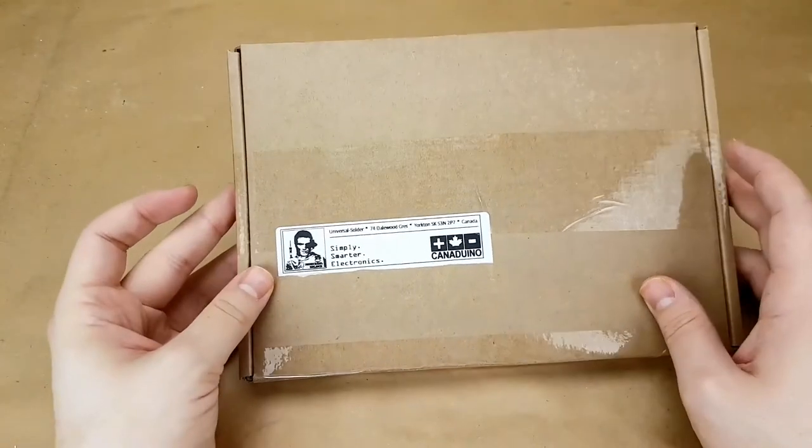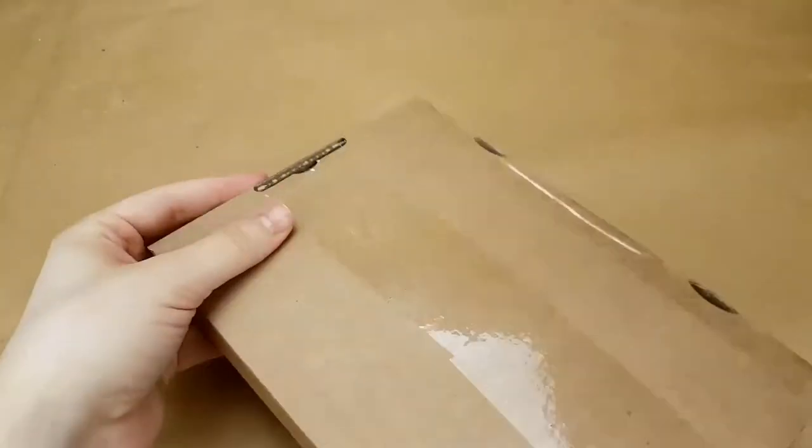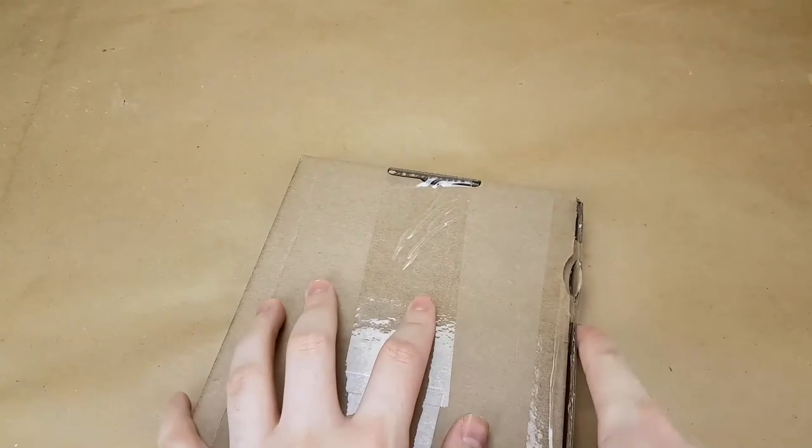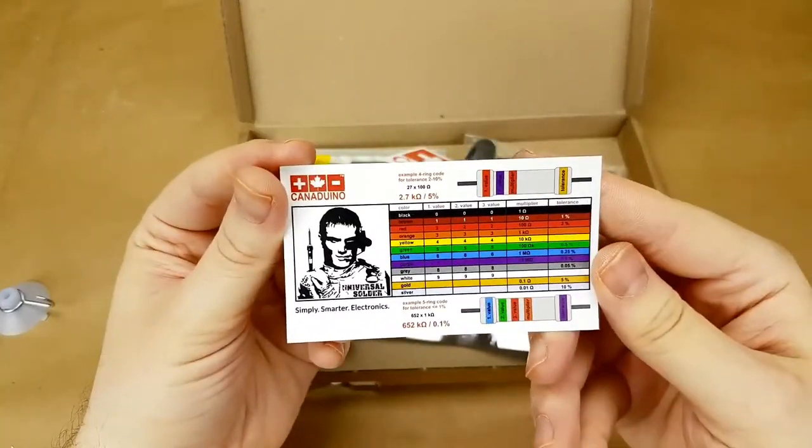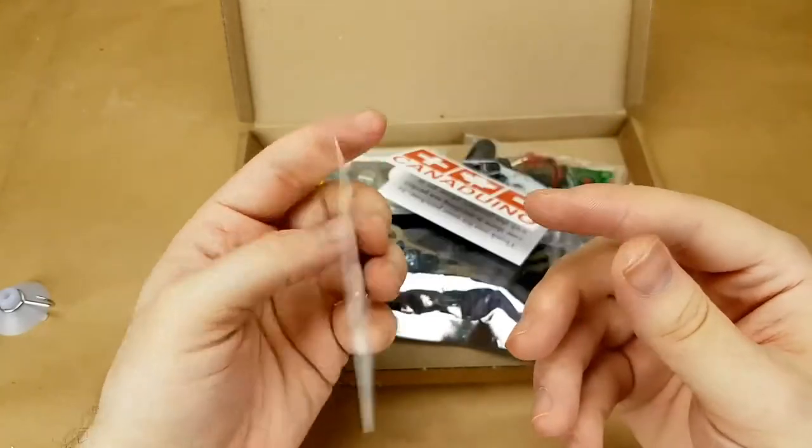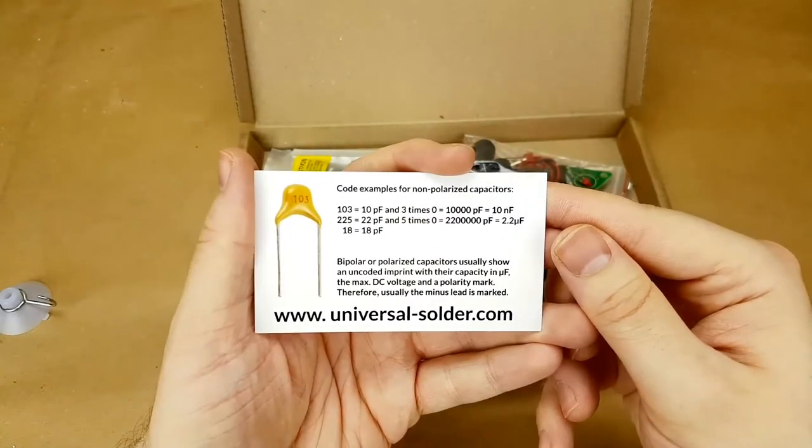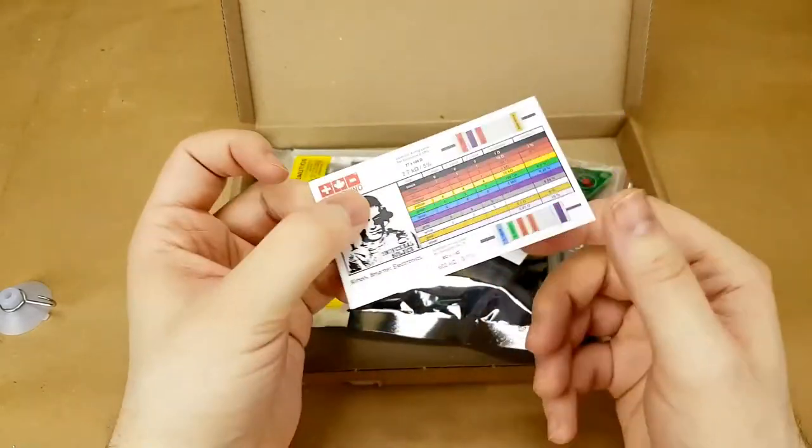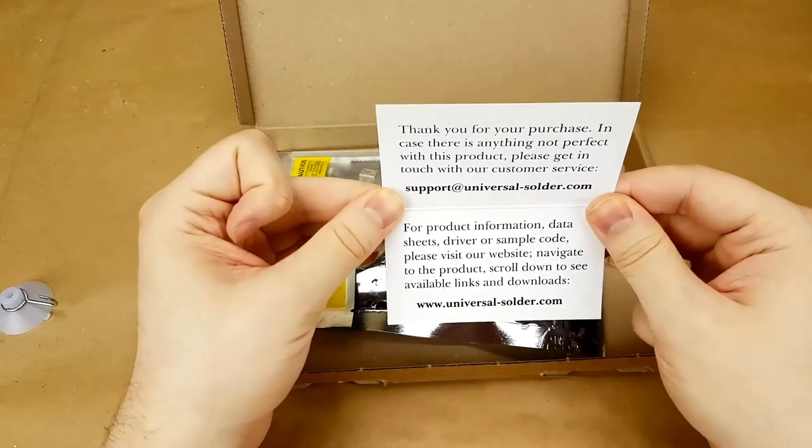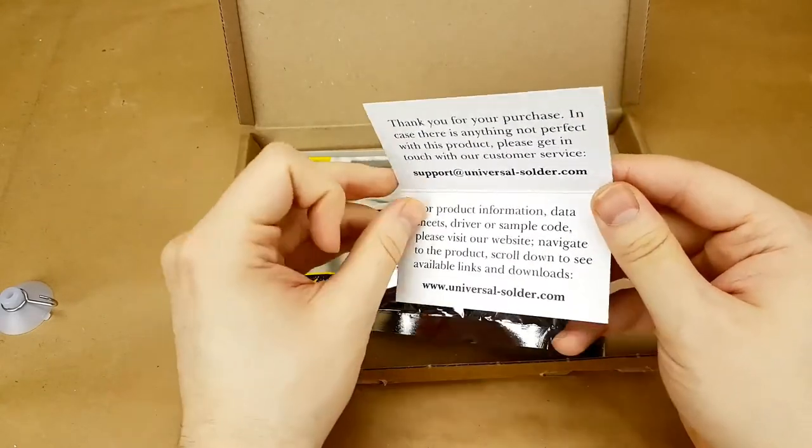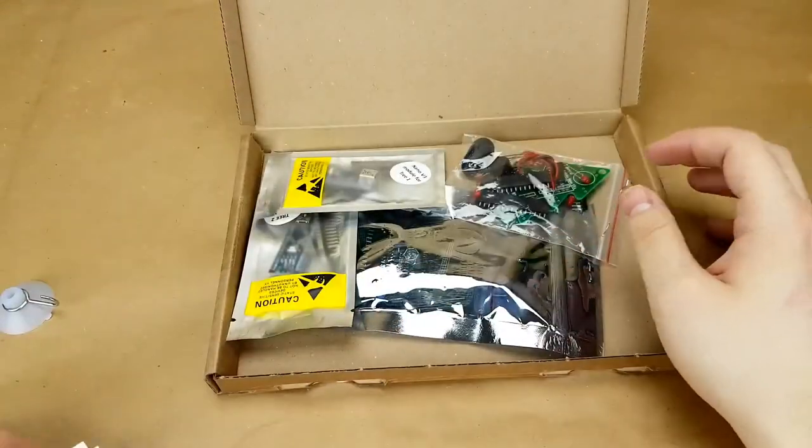we have this box here from Universal Solder. A resistor color code cheat sheet card. It's kind of neat. Thank you for your purchase. In case there is anything not perfect, get in touch with their customer service. For data sheets, drivers, sample code, and all that good stuff, visit their website.